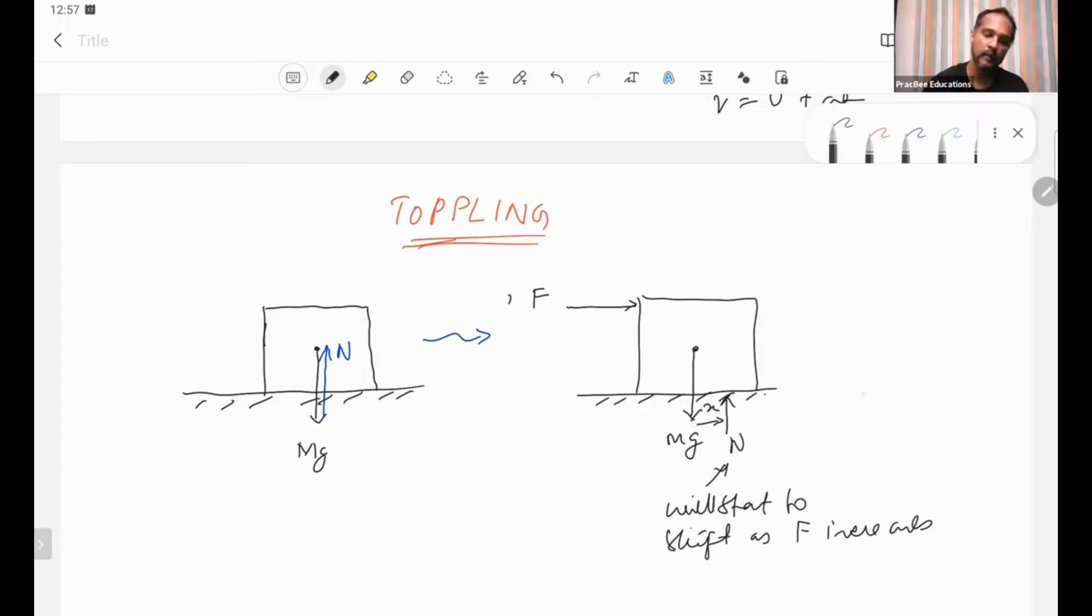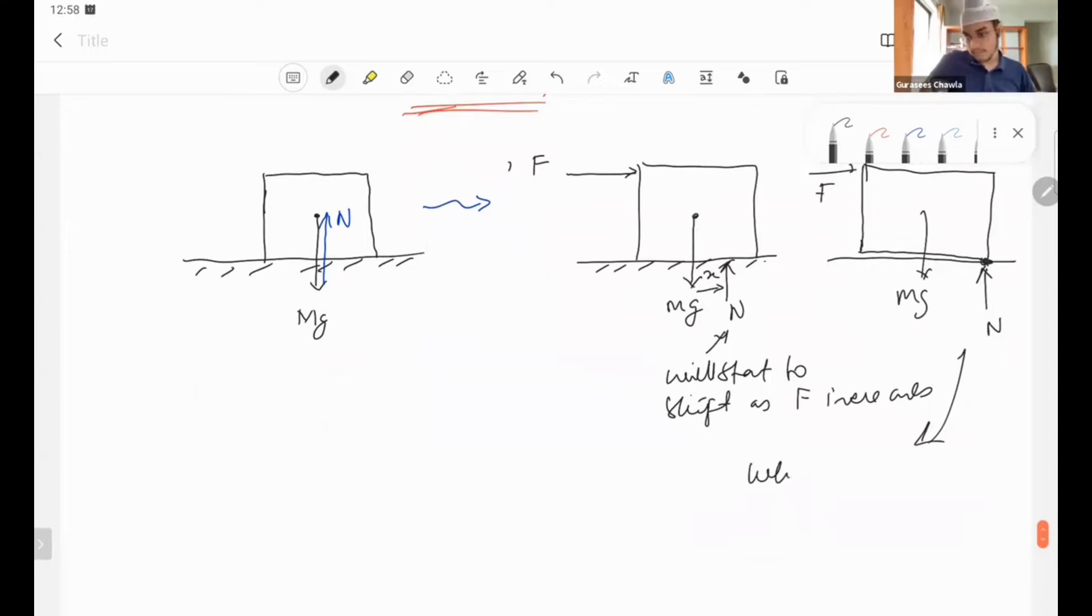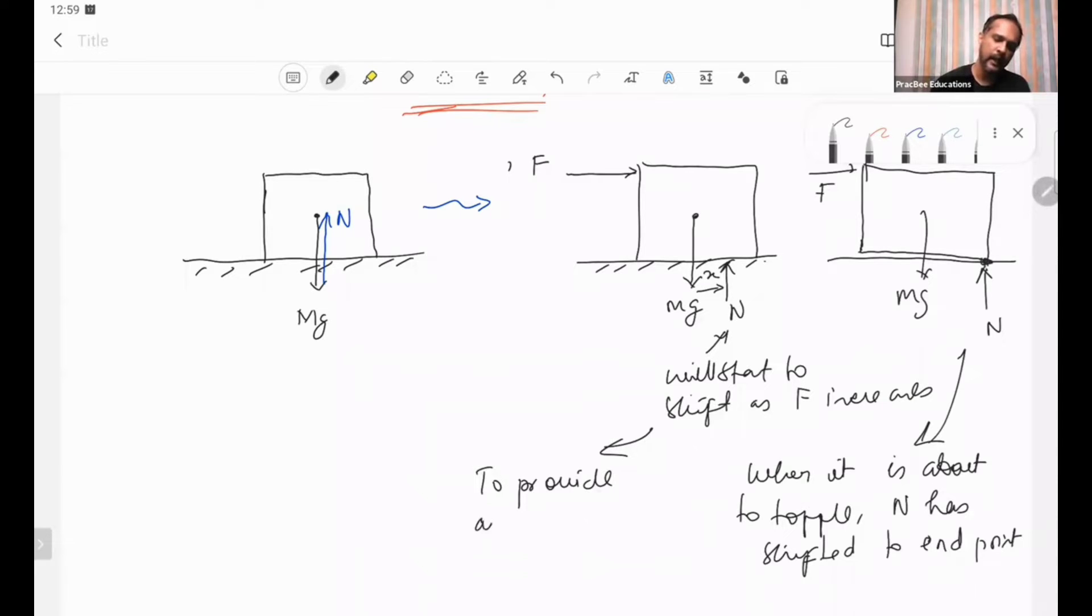And there will come a point when N shifts, suppose it leaves, is just ground contact. For that the force F, Mg, when it is about to topple N has shifted to end point. This is to provide anti-torque, fine, the anti-torque to provide to F.